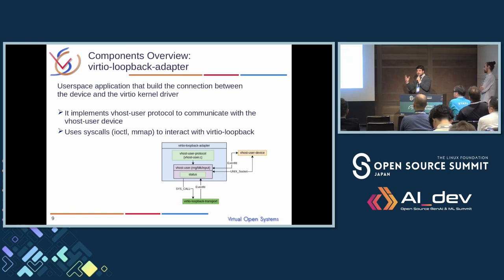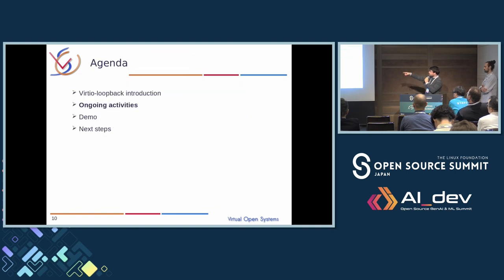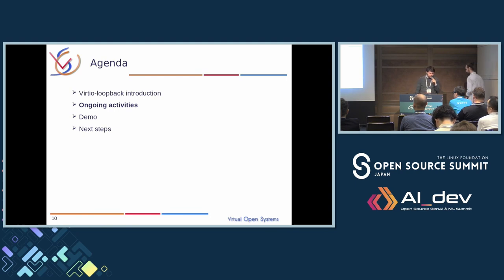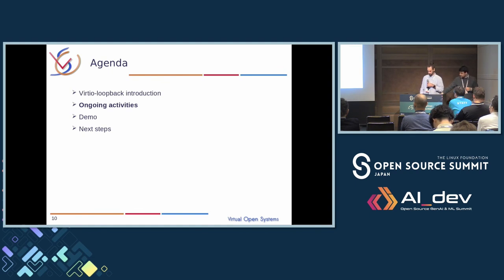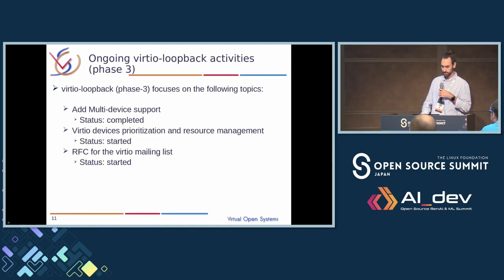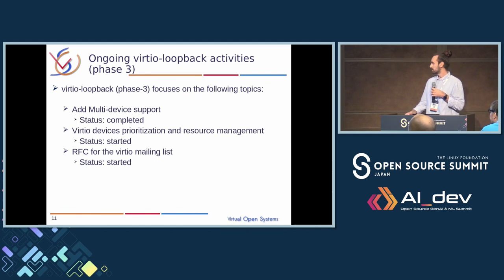This is a brief introduction of the components. At this point we will go through ongoing activities and demo. I leave the stage to Timos, who will give you more details. Thank you. So we are going to talk together about the ongoing activities. We have three main activities this year: implementing multi-device support, VirtIO device prioritization and resource management, and creating an RFC for the VirtIO mailing list to present the technology to the community.